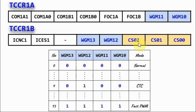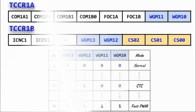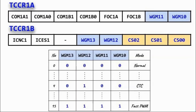We also program the Timer 1 Control Register to determine the prescaler value. This is done by programming the clock select bits located in Control Register B. A value of 101 will give us a prescaler of 1024. Since we are programming Timer 1 in normal mode, the rest of these bits are not used, so we can assign zero to them.